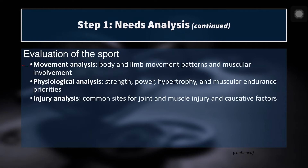In the physiological analysis, what are the strength, power, hypertrophy, and muscular endurance priorities in this sport? If it's an endurance sport then endurance is the priority; if it's a strength sport then strength is the priority. The simplest example is comparing a powerlifter, who will obviously prioritize strength, to a distance runner, who will obviously prioritize aerobic endurance.